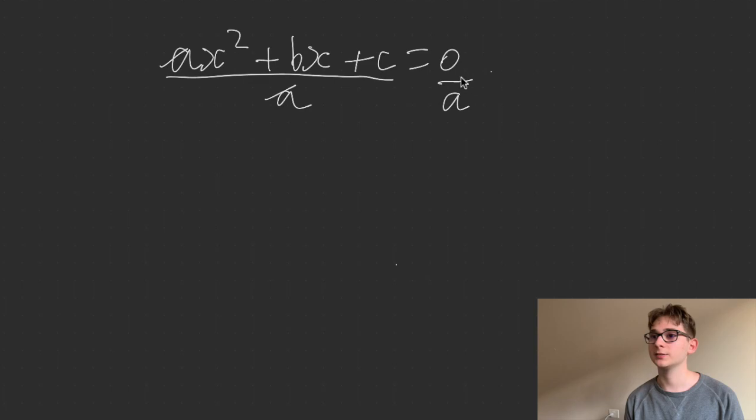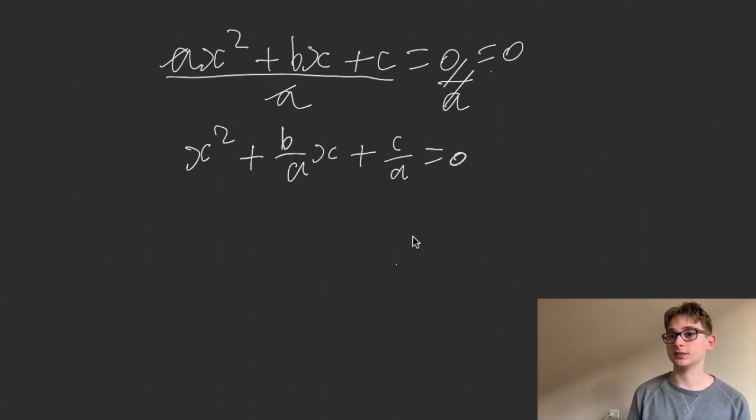So then you can get rid of that coefficient of a and make life easier. This and that cancel out, and then that's just equal to 0, because 0 divided by anything is 0. So you're going to get x squared plus b on a x plus c on a equals 0. Now we can complete the square.